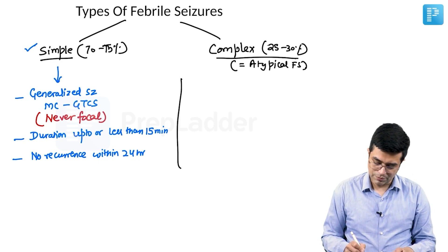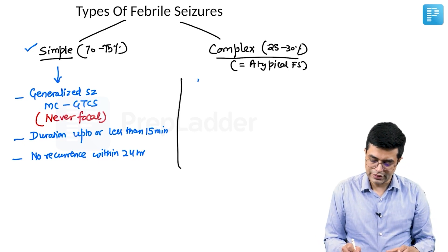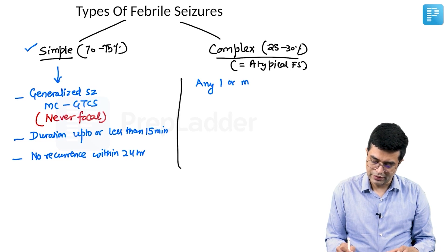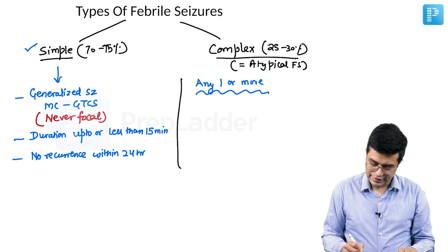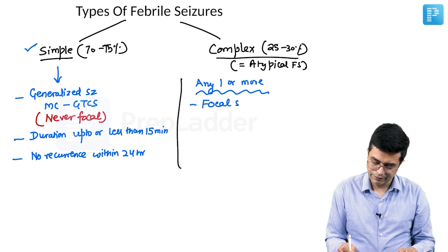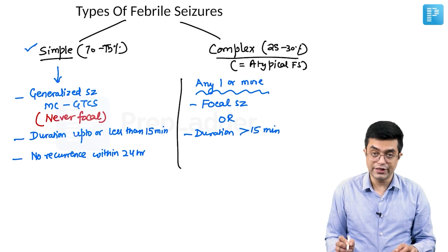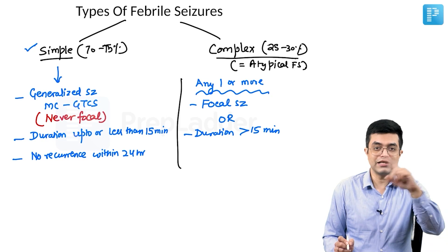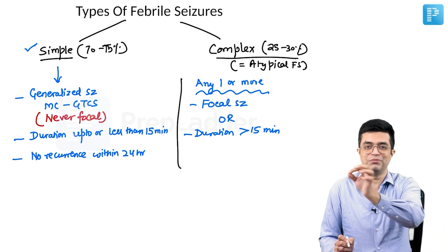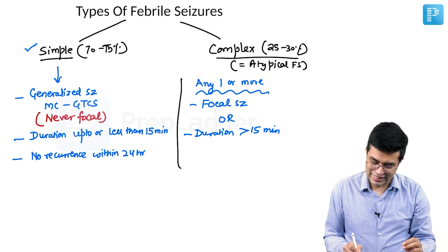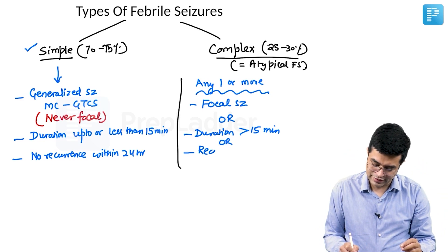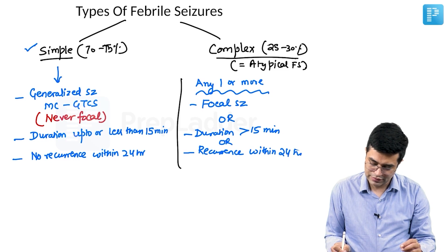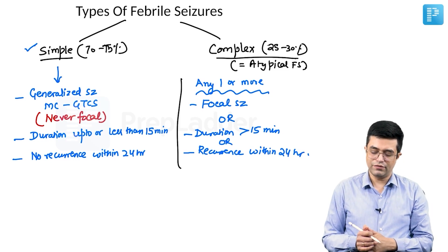Complex febrile seizures are the opposite. Any one of the following criteria qualifies: focal seizures, duration more than 15 minutes — remember up to and including 15 minutes is simple, 15.01 minutes onwards is complex — or recurrence within 24 hours. They are called complex or atypical febrile seizures.